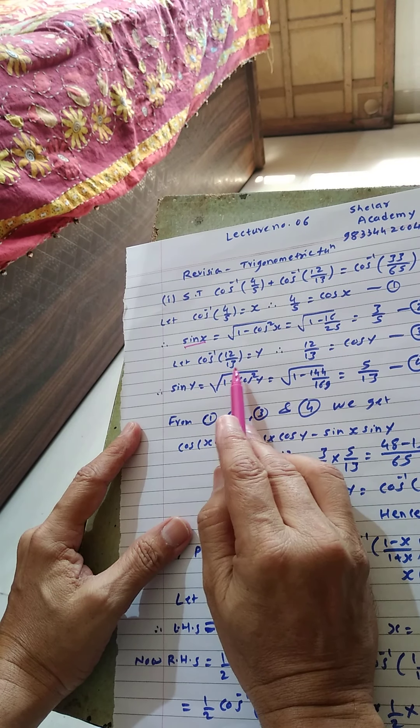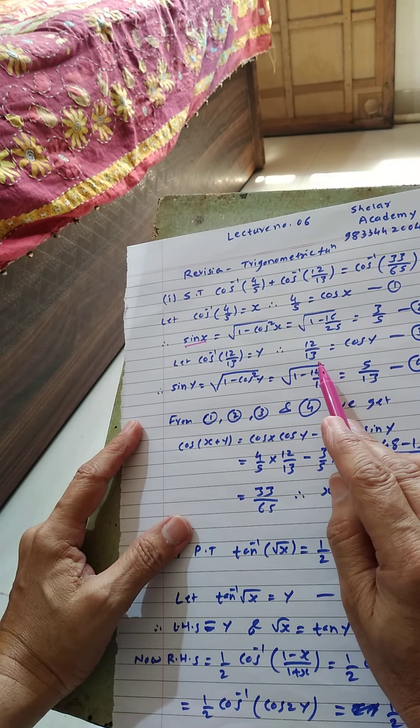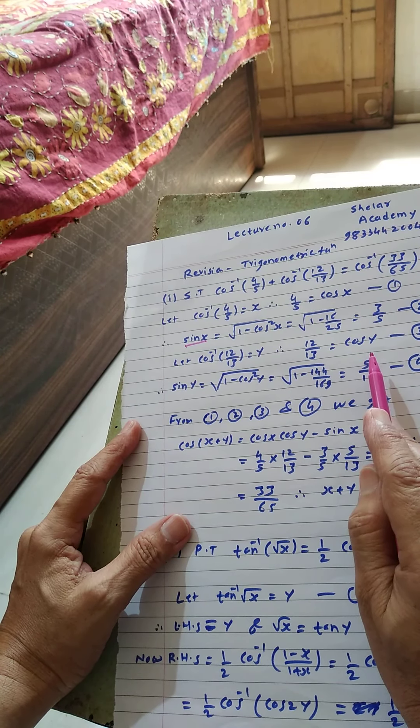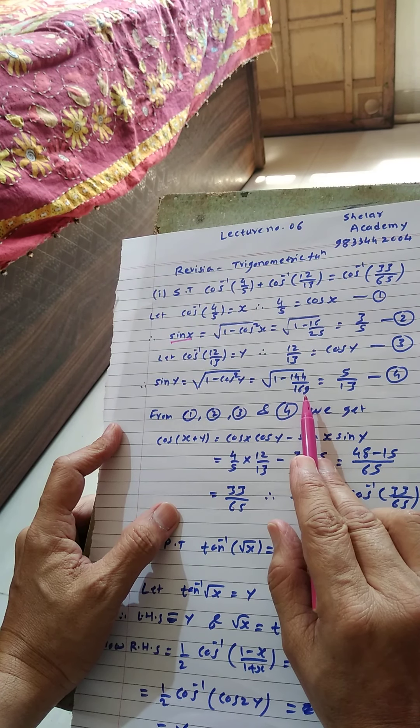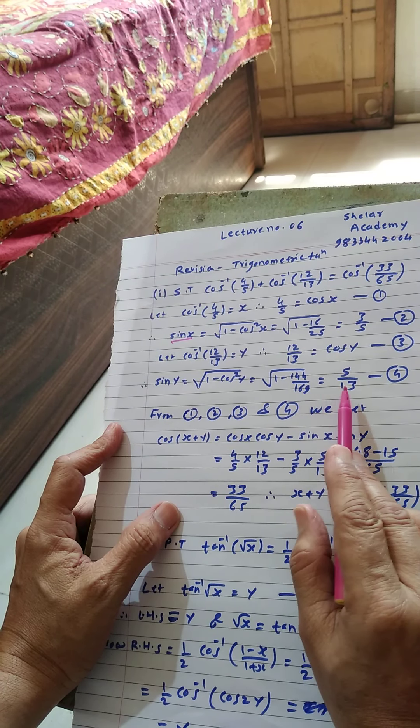Let cos inverse 12 by 13 is equal to y. Therefore 12 by 13 is equal to cos y, equation number 3. From cos y, sin y we are getting root of 1 minus cos square y equals root of 1 minus 144 by 169, that is 5 by 13, equation number 4.